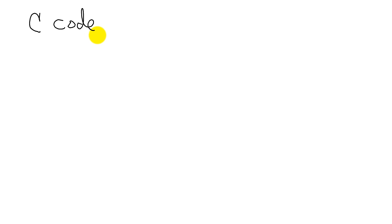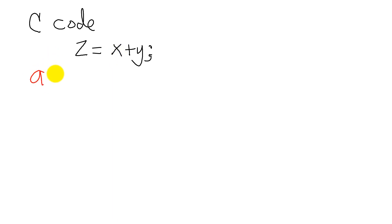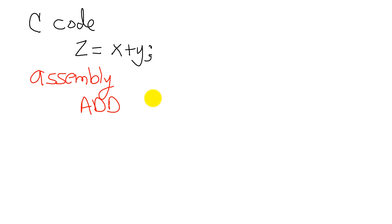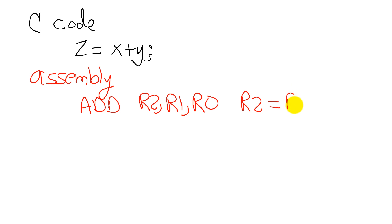Let's look at how software looks in the computer. If we begin with C code, we could write an expression where variable X is added to variable Y and the contents are stored in variable C. This same program seen in assembly code might look like this: the assembler instruction ADD stores into R2 the contents of register R1 plus register R0, where these are registers.